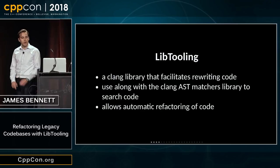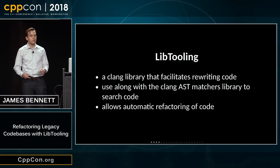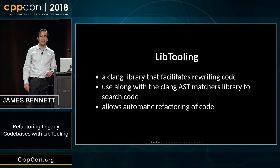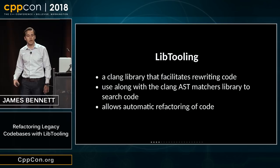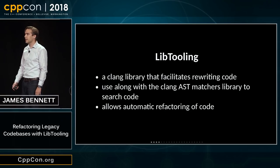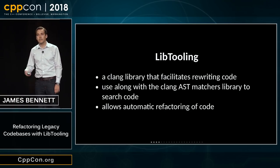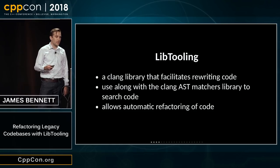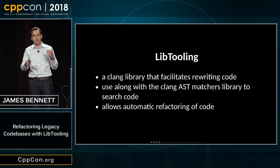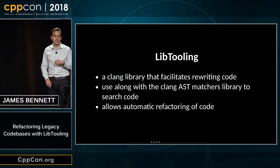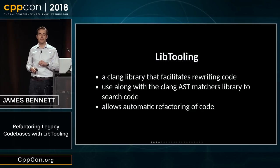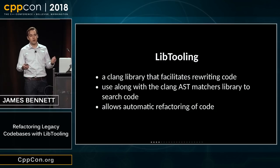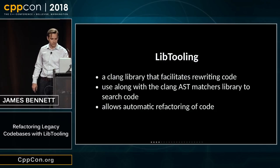Lib tooling is a Clang library that facilitates rewriting code, and you would use it along with another library, the Clang AST Matchers Library, to search code. Together they allow you to automatically refactor code. The first time I needed to generate code, I thought I'd write a parser — it was going to look at C++ code, parse it, and generate code based on that. I worked on that for two weeks before I realized just how bad of an idea that was. Clang gives us something really useful, which is that parser. A C++ parser isn't really something we could write ourselves.